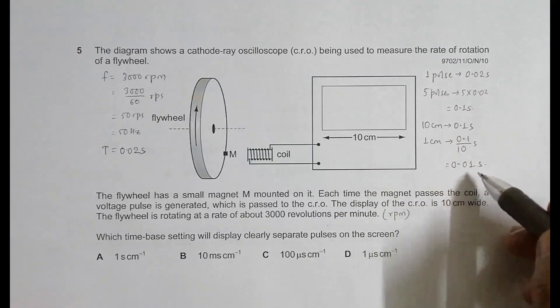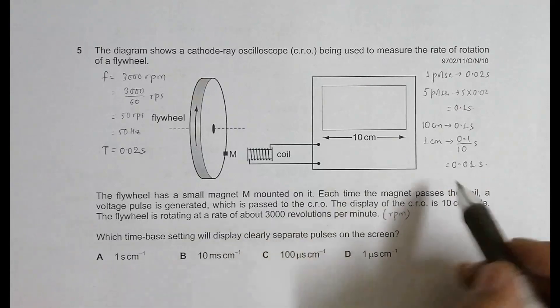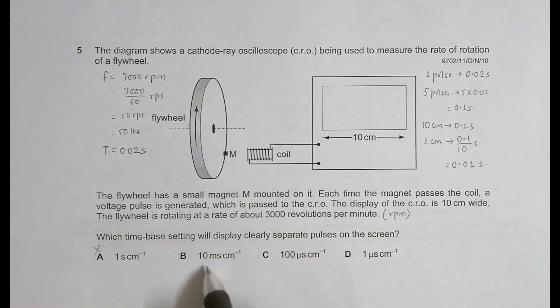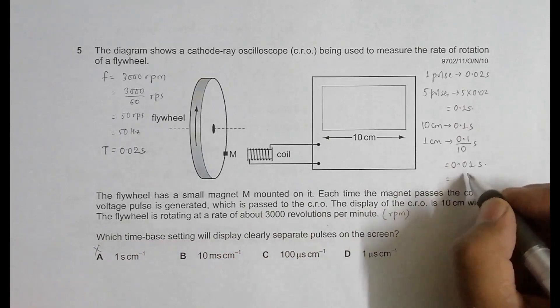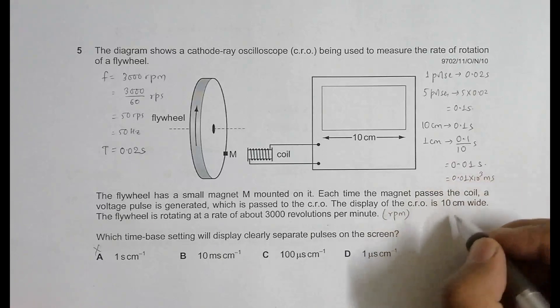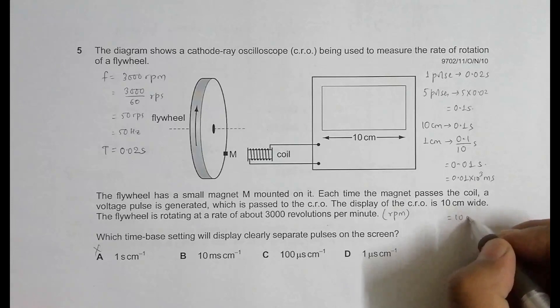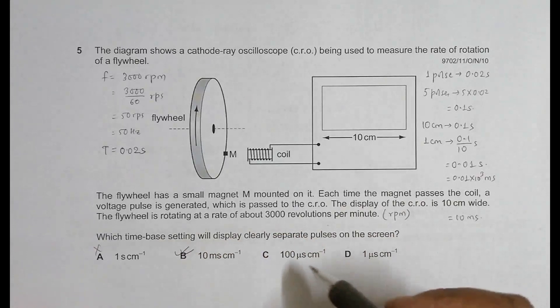So for 1 centimeter it is 0.01 seconds. Let's see if this is correct. We have 0.01 seconds per centimeter. If I change this into milliseconds, it will be 0.01 times 10 to the power 3, which equals 10 milliseconds. So choice B seems to be correct.